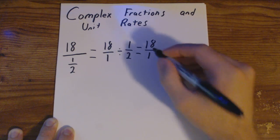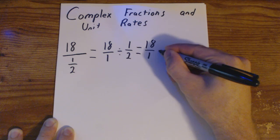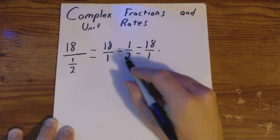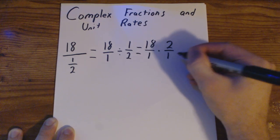Bring over the 18 over 1. We're going to change this from division into multiplication by using the reciprocal. So we just flip that one. 2 over 1.